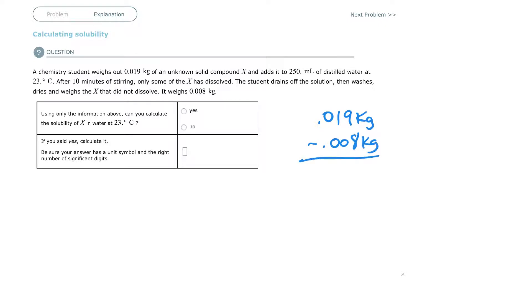and it weighs 0.008 kilograms. Well, the stuff that dissolved is going to be whatever's left, right? So the calculator says it's 0.011 kilograms. So that's how much dissolved in the water.